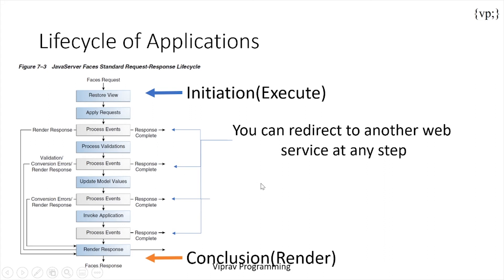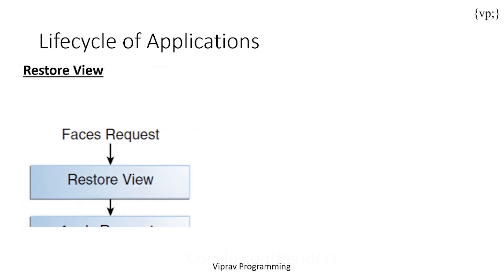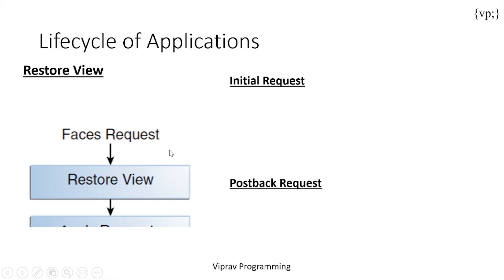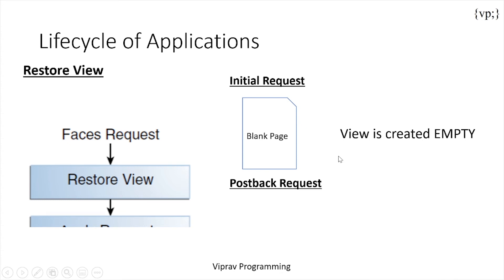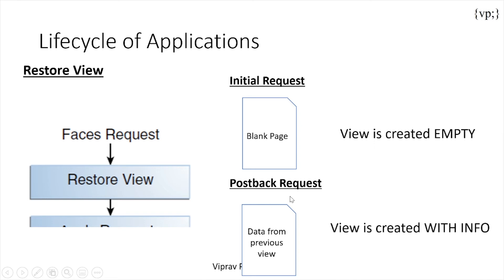All apps that use JSF go through a similar lifecycle of initiation and conclusion. The first thing that your lifecycle encounters is your restore view, which either has an initial request or a postback request. An initial request is a request for a new page — the first time that your user has requested this page, whether they clicked a link or typed something in. This initial request will have a blank page, and the view is created empty. A postback request is when a user enters information to the server, and the server has to compute it and send back a response — this is called a view created with info.